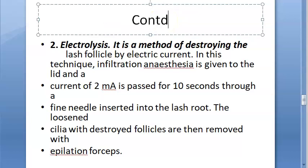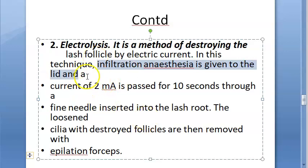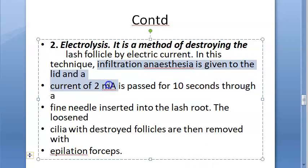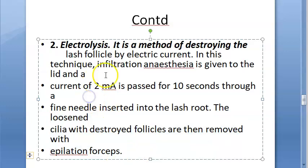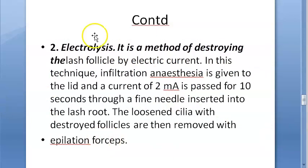Electrolysis destroys the lash follicle using electric current so the lash does not grow back. Infiltration anesthesia is first given to the lid. Then a current of 2 milliamperes is passed for 10 seconds through a fine needle inserted into the lash root. The loosened cilia with destroyed follicles are then removed with epilation forceps.